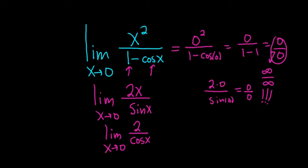And now we're in a good place. Now we can plug in 0, and we get 2 over cosine of 0. Cosine of 0 is 1, so it's 2 over 1. And so the answer is just 2.